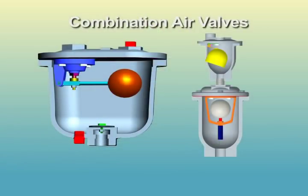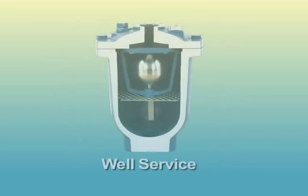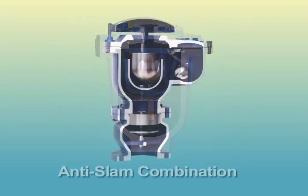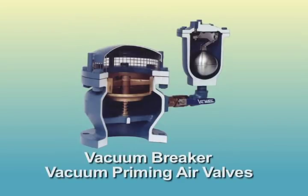Combination air valves are available in single body and dual body configurations. The single body configuration is more compact and economical. The dual body configuration provides two independent valves allowing access to the air release valve while the air vacuum valve continues to protect the pipeline. The dual body valve also provides a much wider range of sizing options. There are a number of different types of air valves including well service, anti-slam combination, ventilation, vacuum breaker, and vacuum priming valves.